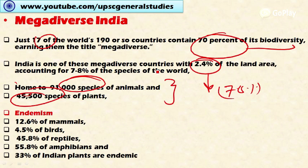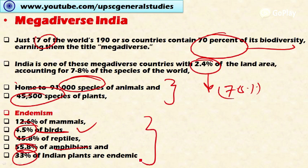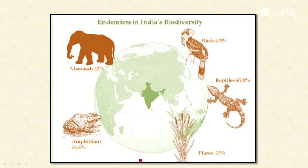Among these species of plants and animals, there is a high level of endemism. Endemism refers to the uniqueness of a particular species to a particular region — these species are not present in any other part of the world. Out of 100 mammals, 12.6 percent are endemic to India; 4.5 percent of bird species, 45 percent of reptiles, 55 percent of amphibians, and 33 percent of plant species are endemic to India.